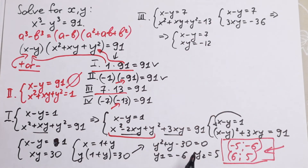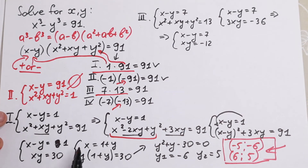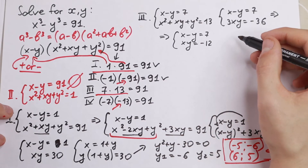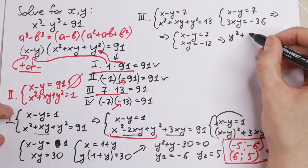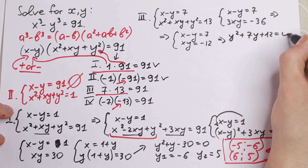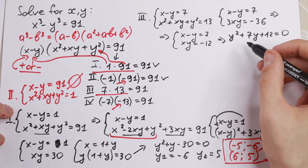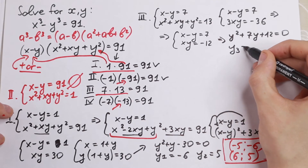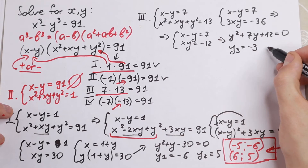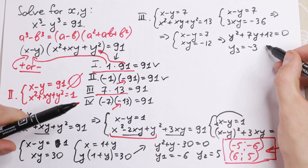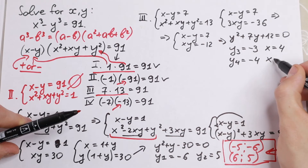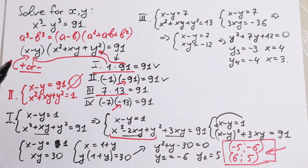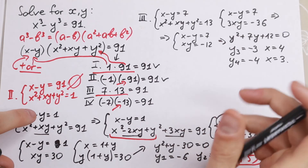Using the same method, write x equals 7 plus y and substitute into xy equals minus 12. We get y squared plus 7y plus 12 equals 0. This gives y equals minus 3 (so x equals 4) and y equals minus 4 (so x equals 3), yielding the pairs (4, minus 3) and (3, minus 4).